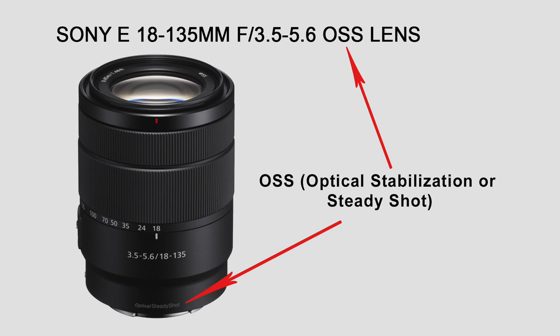As for Sony, which has become a very popular camera brand, this feature is called OSS, or Optical Steady Shot. You might be wondering why all those companies call the same thing differently. The answer is most likely done for marketing and branding purposes, so it makes them different from the competition.